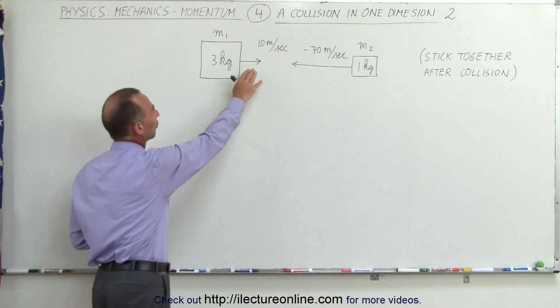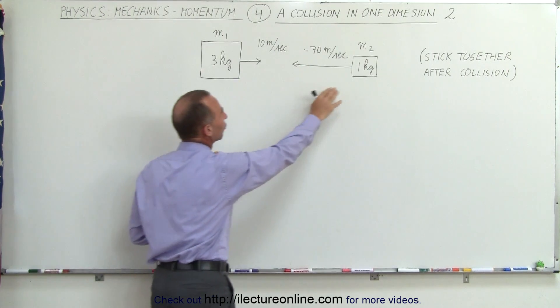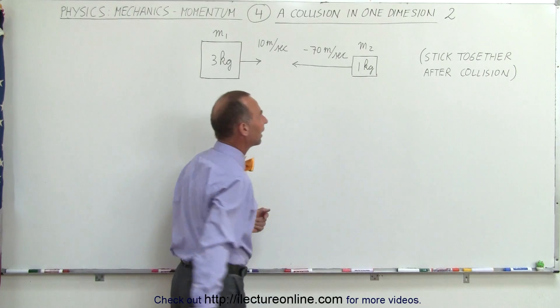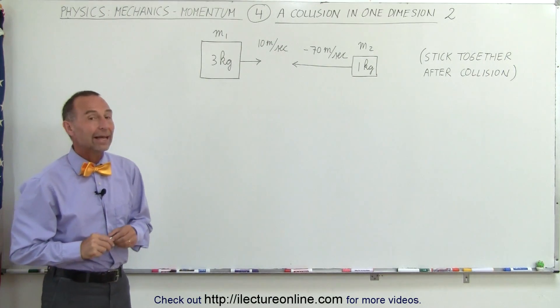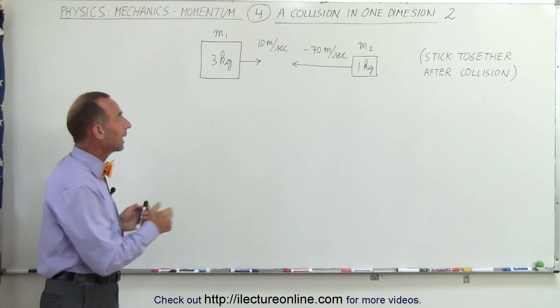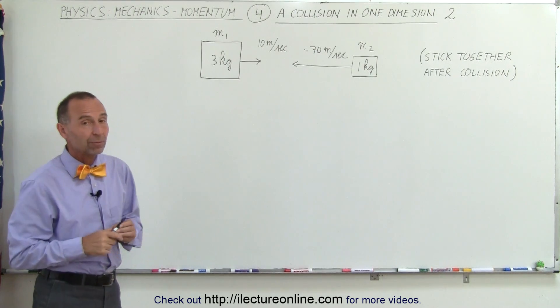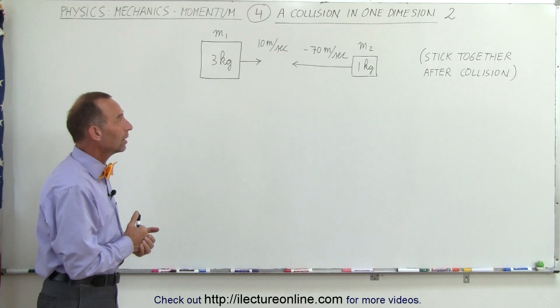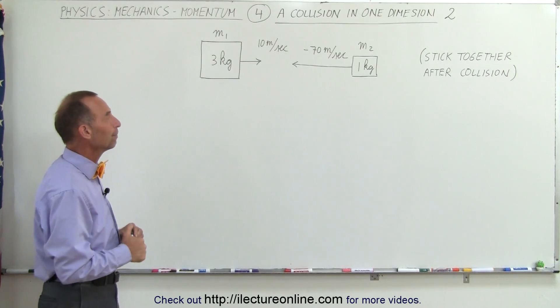Notice we have a large object moving to the right at 10 meters per second and a smaller object moving to the left at 70 meters per second. When we're dealing with momentum in collisions we indicate positive or negative direction because these are vector quantities. Momentum is a vector quantity.